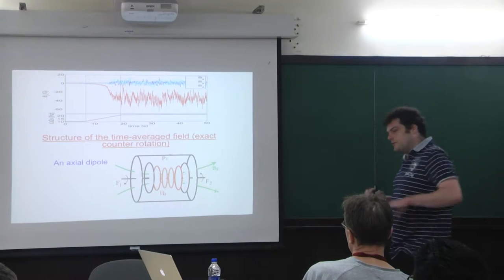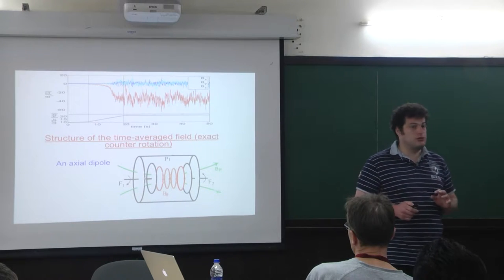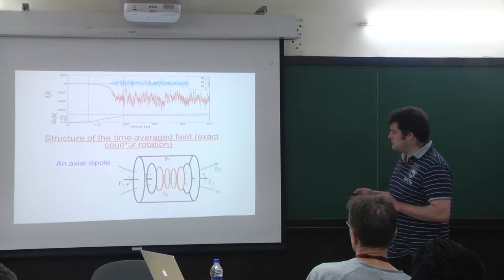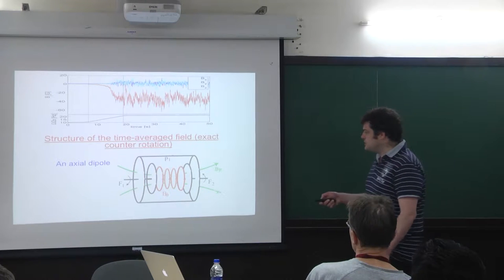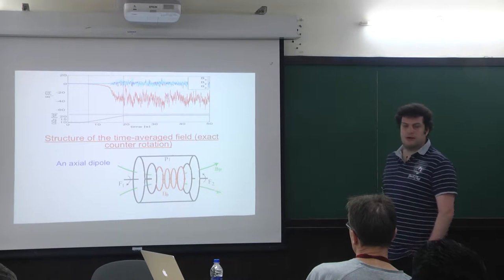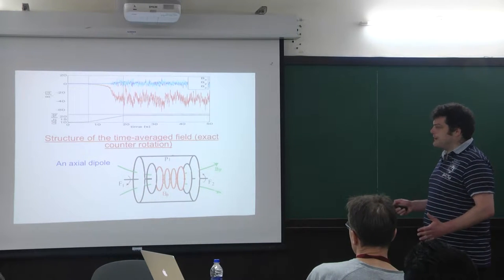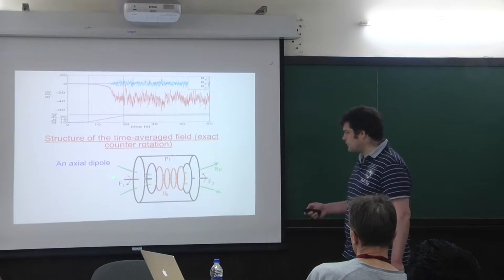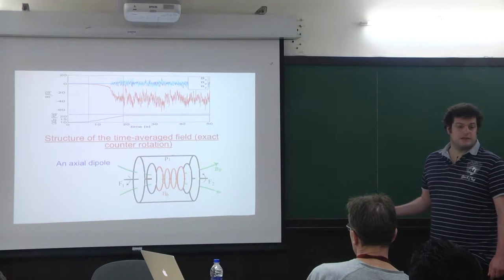We have two disks that counter-rotate. Focusing on the case where the two disks counter-rotate with exactly the same speed — what we call exact counter-rotation — we can measure the field at different positions or time-average it. The time-averaged magnetic field has a specific structure: it is an axial dipole, with the poloidal field shown in green and the toroidal field in red. This time-averaged field is an axial dipole that can point either to the right or to the left.